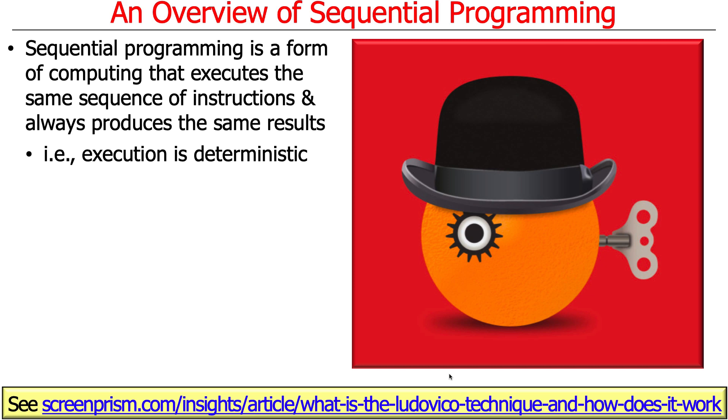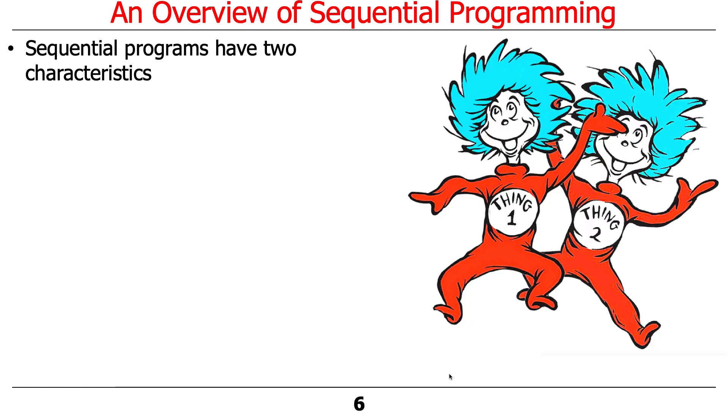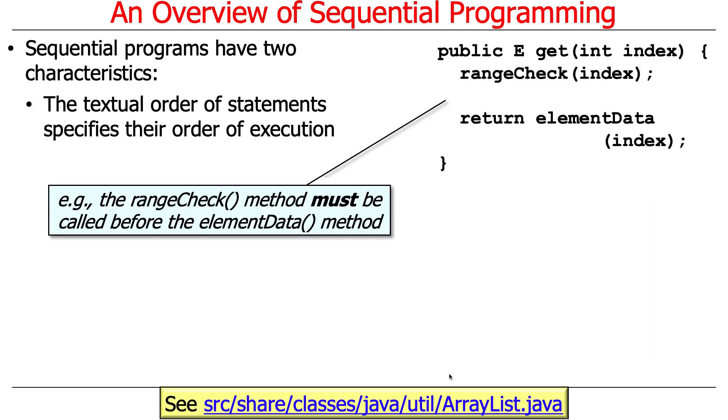If you look at the code, you can see what it's going to do. And in fact, there are two key characteristics of sequential programs. One is that the textural order of the statements specifies the order in which they execute, or at least they logically execute.